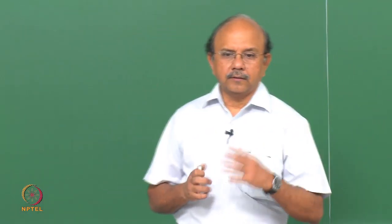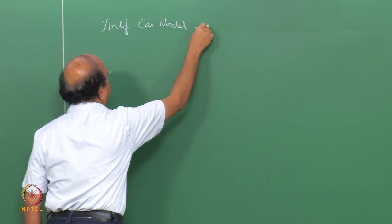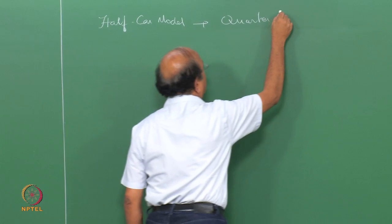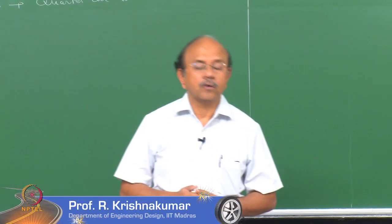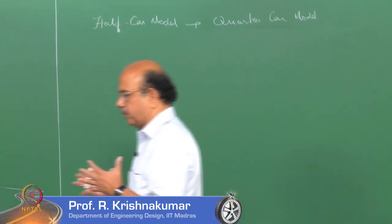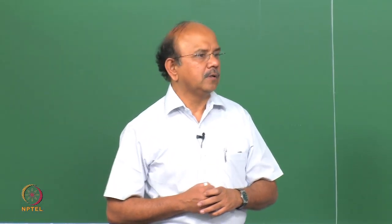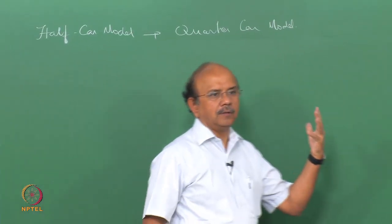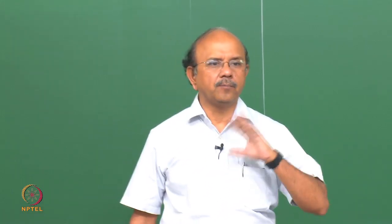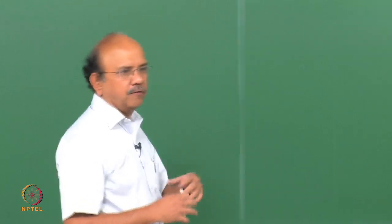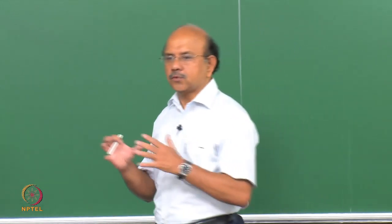In the last class, we were looking at what is called the half car model and then we reduced it to what is called the quarter car model. Let us understand what we are trying to do now with the quarter car model. As I told you in the last class, you can have a full car model, but to quickly understand the effect of the suspension system and the two very important frequencies that go with the system — sprung mass, unsprung mass, and the tyre — we are looking at this quarter car model.